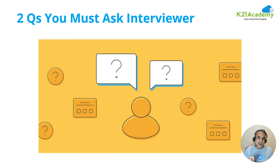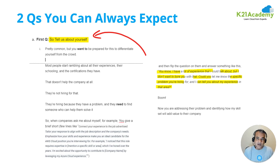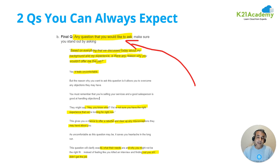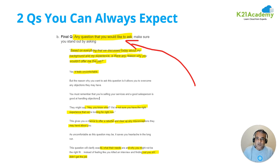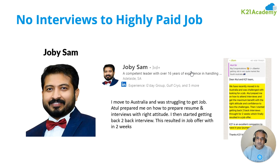We help you prepare for two key questions you can always expect: 'Tell us about yourself' — how do you answer that; and 'Do you have any questions?' — how to ask intelligent questions that show engagement and cover anything you might have missed. Joby went from struggling with no interviews to getting a highly paid job in Australia after moving from the US. We don't stop there — we go an extra mile with six months of on-job support, which gives a lot of weightage to your journey.